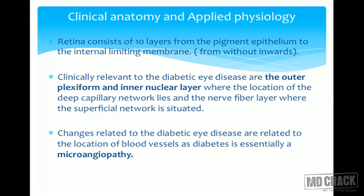The retina consists of 10 layers from the pigment epithelium to the internal limiting membrane. Clinically relevant to vascular diseases are the outer plexiform and inner nuclear layer, where the deep capillary network lies, and the nerve fiber layer, where the superficial network is situated. Being vascular diseases, these affect these particular networks. The changes related to diabetic eye disease relate to the location of blood vessels, as diabetes is essentially a microangiopathy.